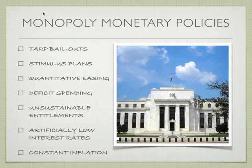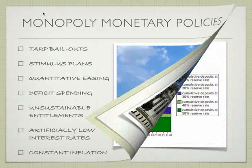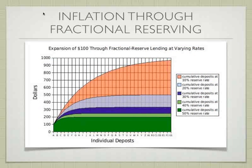Not only through the Federal Reserve but also through our banking system, we are constantly expanding the money supply. Here we have an illustration of how a $100 deposit into a bank within the Federal Reserve system can expand to nearly $1,000 in new money — created just by people borrowing from banks, because banks only have to maintain a 10% reserve. They are essentially authorized by law to create money when they make loans, and this has an inflationary effect as well.